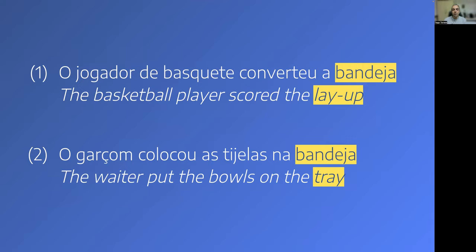In the first sentence we have 'o jogador de basquete converteu a bandeja,' while in the second sentence we have 'o garçom colocou as tigelas na bandeja.' In the first sentence the lexical item 'bandeja' is translated as 'lay-up,' as in 'the basketball player scored the lay-up,' while in the second sentence the same lexical item 'bandeja' is translated as 'tray' in 'the waiter put the balls in the tray.' So the different contexts in which 'bandeja,' this polysemous word in Brazilian Portuguese, occurs define its translation in English.